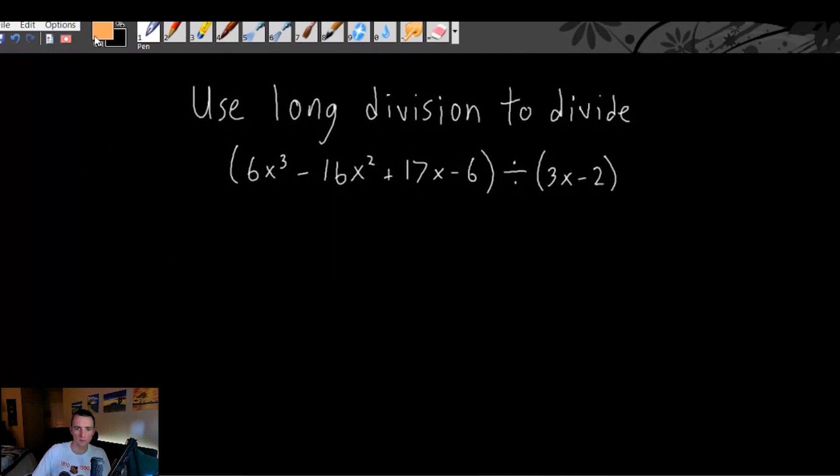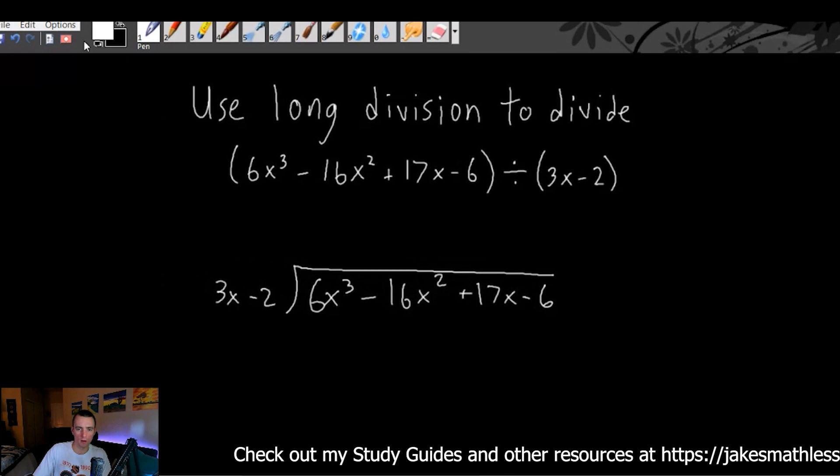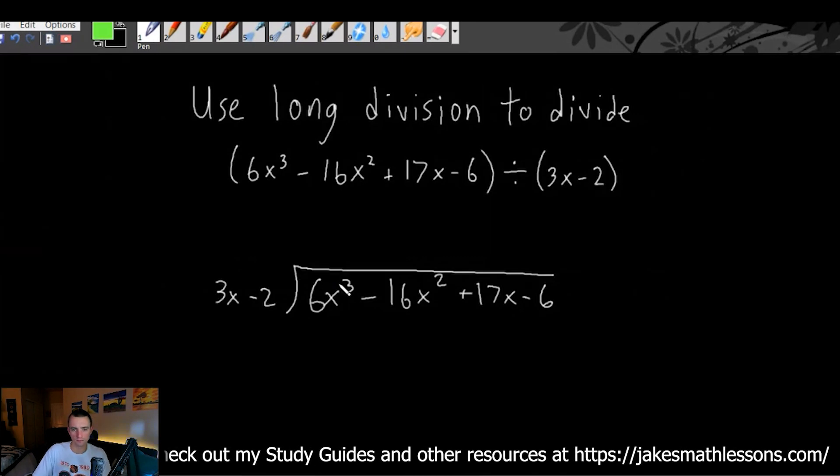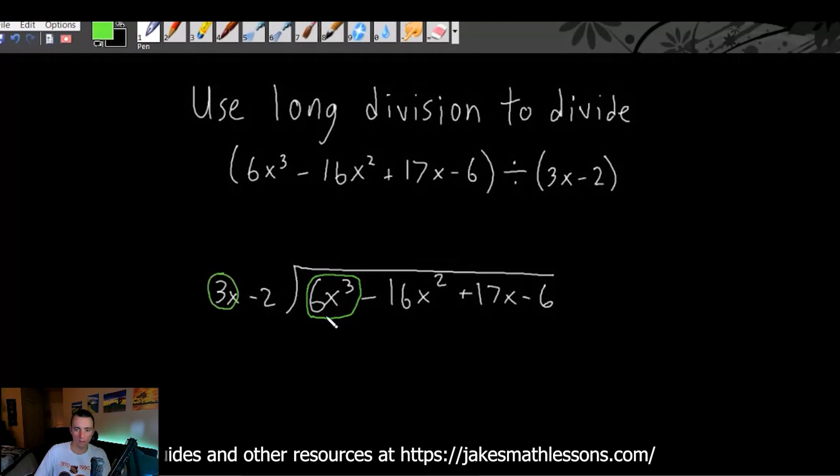So we're going to use long division to divide 6x cubed minus 16x squared plus 17x minus 6, all divided by 3x minus 2. I would always just start out by writing big long first, and then put your division sign, and then whatever this little polynomial is out here. Just like we did in the last example, just going to start by looking at this biggest highest power x term over here, the highest power x term over here.